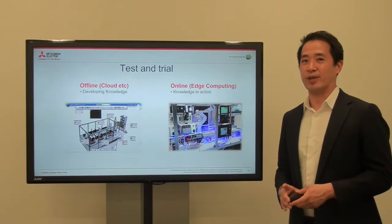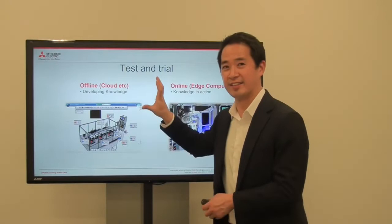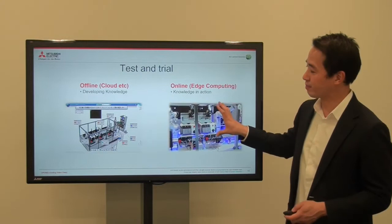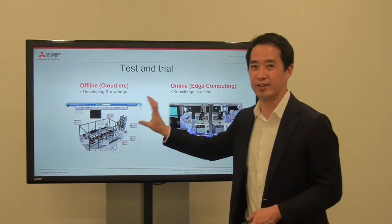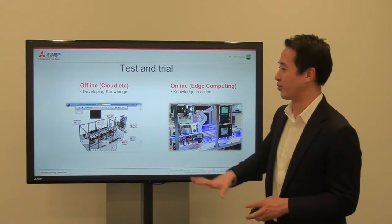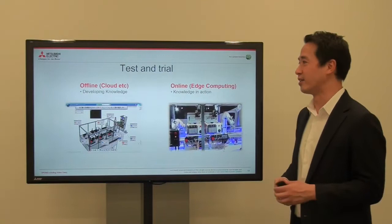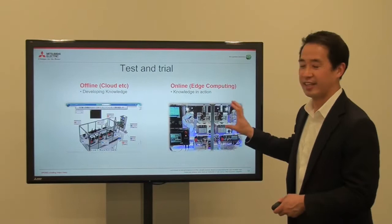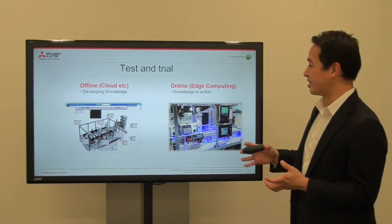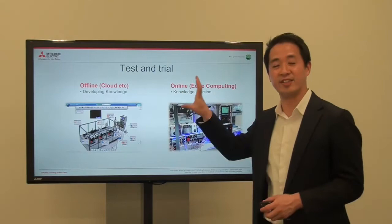One important thing you have to understand is that the virtual world — the offline world, what you're analyzing on the PC — might be different from the real world, your actual machine. You cannot replicate everything that's happening in the real world in a computer. The model you're making might have something altered from the actual world. That's why it's important to make the model offline, in the cloud, in the virtual world, but then check it in the real world to see if it produces the correct results. This offline-online comparison, test and trial, is very important.